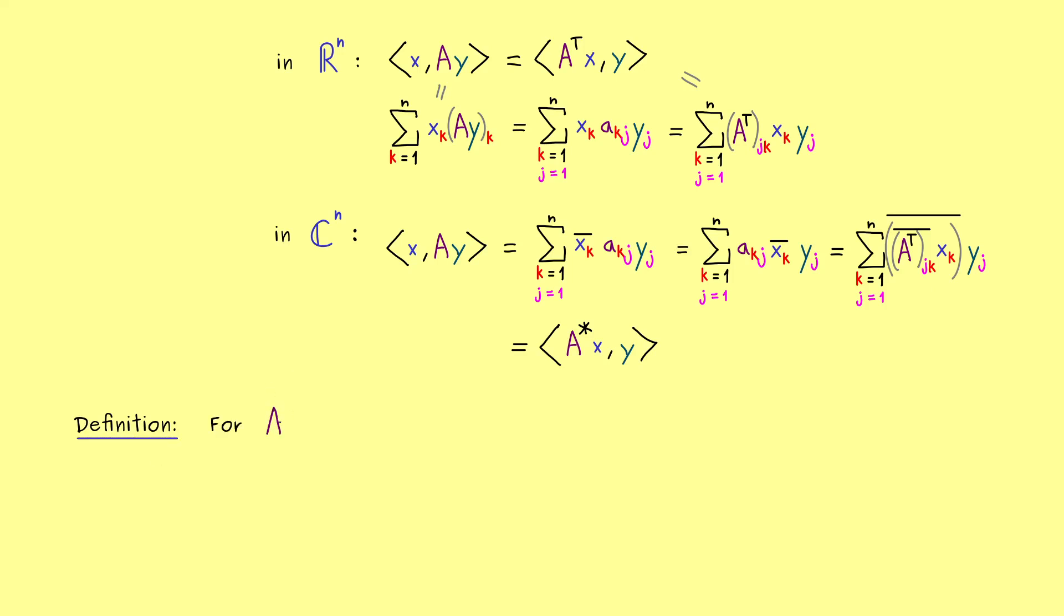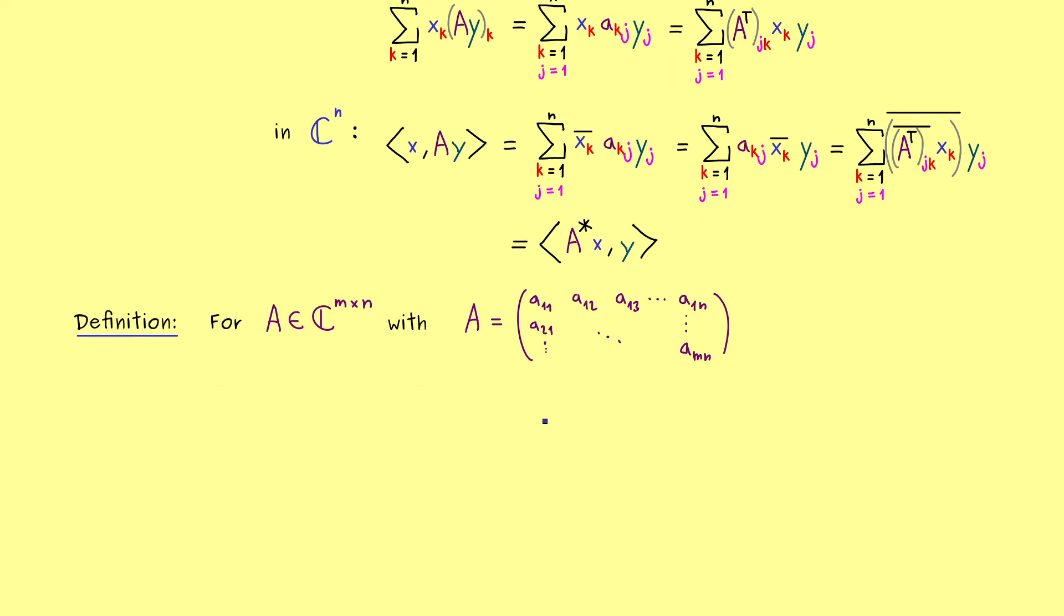Okay, so now I would say, let's put that, what we know, into a formal definition. So for any complex matrix, where the components are complex numbers and written with lower case a's. This means we have a_11, a_12, a_13 and so on. And of course we have that for each row, and the last element here would be a_mn. So this is something you already know well enough. The only difference is now that we have complex numbers as entries.